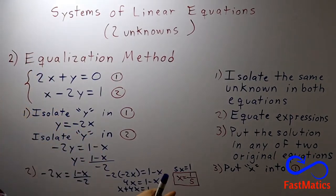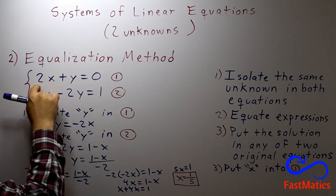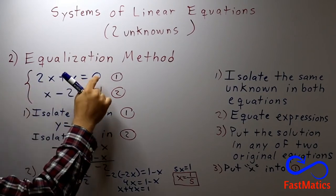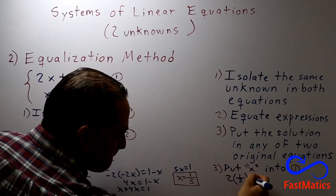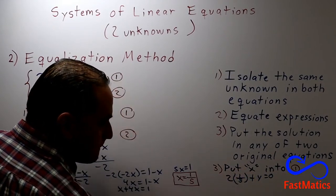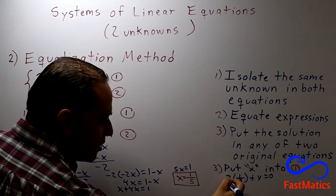Then instead of writing x, I will put 1 over 5. So 2 times 1 over 5 plus y equals 0. 2 times 1 over 5.